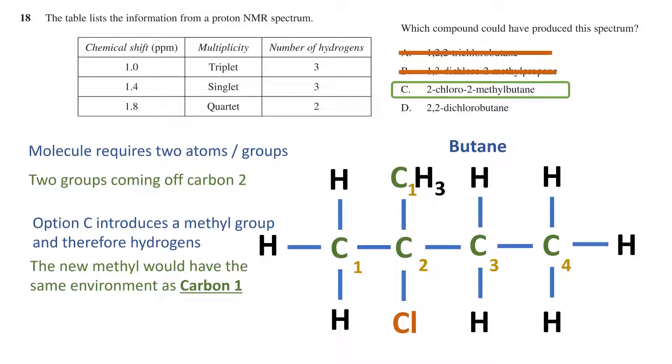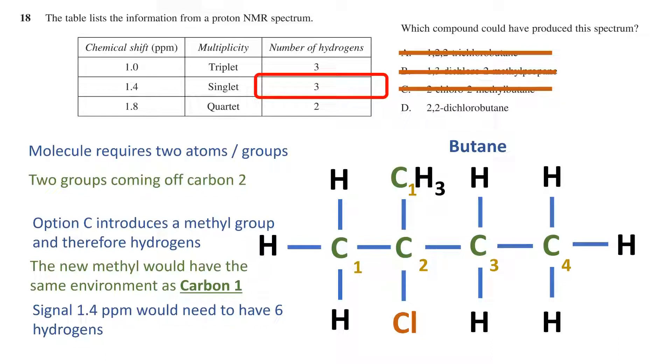this would mean that the 1.4 part per million signal would need to have six hydrogens in our table above. The table only has three. Therefore, option C is also not the correct answer.